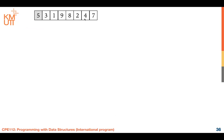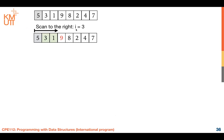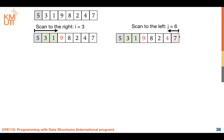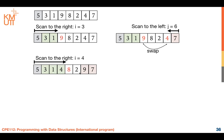Let me give you an example. Suppose we have a list of numbers. First, we select five as the pivot. Then scan to the right: three is less than five — do nothing; one is less than five — do nothing. Nine is greater than five, so stop here. Then go from the back: seven compared with five — seven is greater, continue. Four is less than five — stop. Now swap four and nine, so four goes left and nine goes right. Continue scanning to the right.